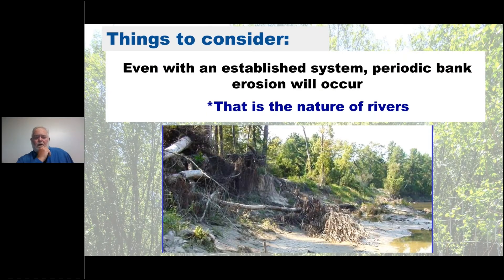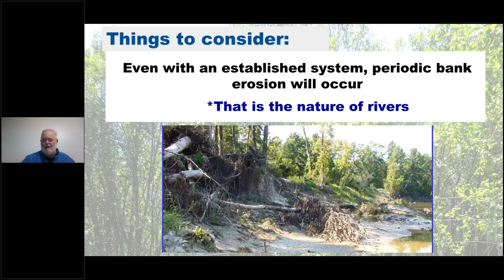With established systems, periodic bank erosion will occur — that's just the nature of rivers. It may look bad when it erodes into a bank, but because the riparian zone is well vegetated with a variety of herbaceous, woody, and shrubby material, it will slow down that erosion. Planting the riparian zone and keeping it well vegetated will save you a lot of heartache in the long run.